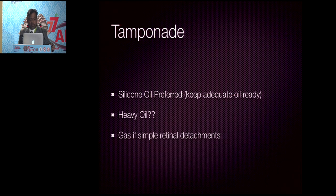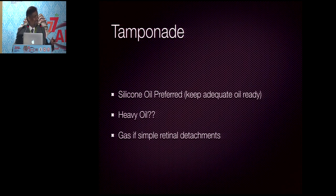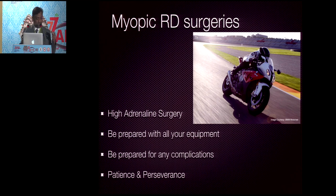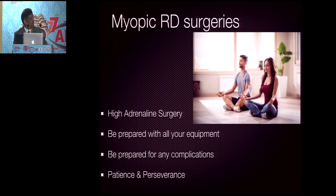For tamponade, prefer silicone oil in very high myopia. Keep adequate oil — the eye is too large and one bottle may not be enough. Use gas only for simple retinal detachments with few holes where you are confident gas will help. High myopic RD surgeries are always high-adrenaline surgeries — be prepared with all equipment: extra PFCL, extra silicone oil, chandeliers, and everything ready. Patience and perseverance helps convert that high adrenaline into a peaceful surgery.